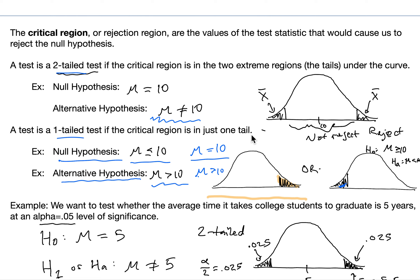A test is a one-tailed test if the critical region is in just one tail — just the right tail or just the left tail. In this case, the null hypothesis would be that the mean is less than or equal to 10, and the alternative hypothesis would be that the mean is strictly greater than 10. Or if we're talking about a left-tailed test, the null hypothesis H0 is that the mean is greater than or equal to 10, and the alternative hypothesis HA — the results that would cause us to reject the null hypothesis — is that the mean is strictly less than 10.